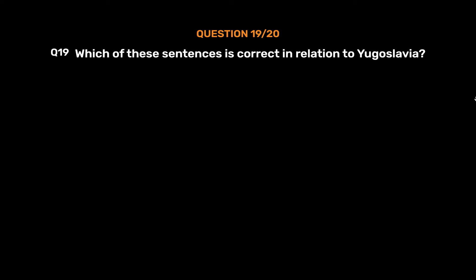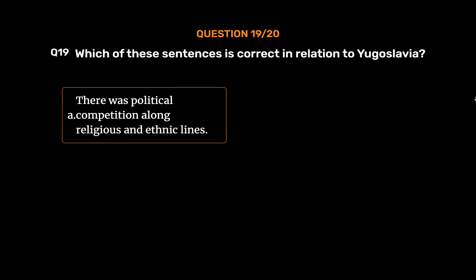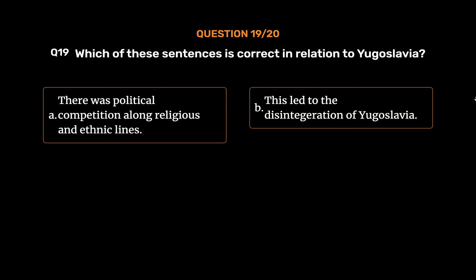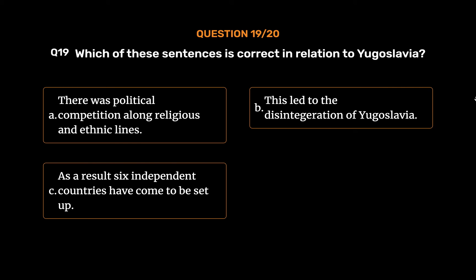Question number 19. Which of these sentences is correct in relation to Yugoslavia? Option A: There was political competition along religious and ethnic lines. Option B: This led to the disintegration of Yugoslavia. Option C: As a result, six independent countries have come to be set up. Option D: All of them.